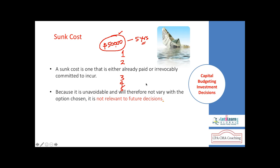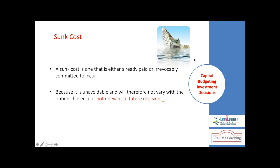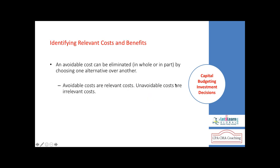In investment decisions, we need to understand certain terms. Sunk cost is the cost incurred in the past. For example, you acquired rights on an intangible asset and paid fifty thousand dollars for a period of five years — in the first year there was an outflow of fifty thousand dollars, and in the second through fifth years you use those rights to generate cash flows. That fifty thousand dollars is called sunk cost.